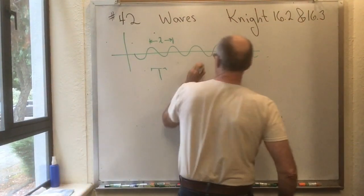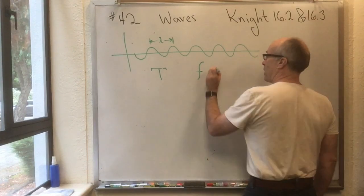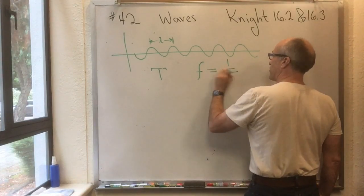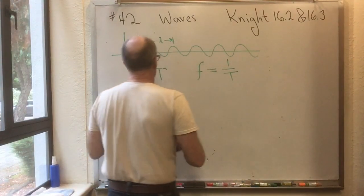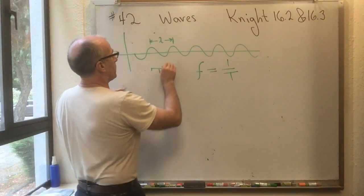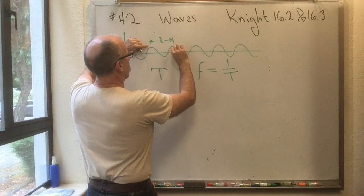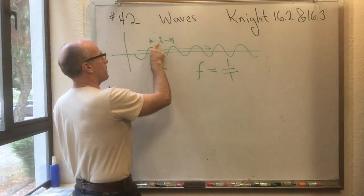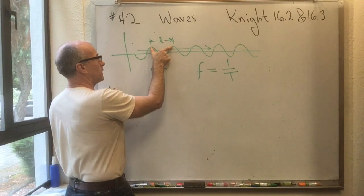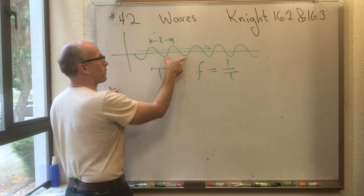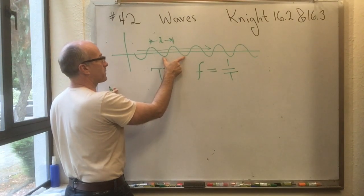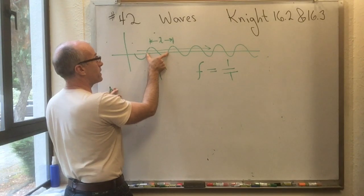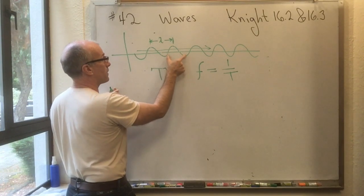Another thing that we reused from the last chapter is we call F equal to 1 over T, the frequency. So if this is a wave train, and this entire wave train is moving to the right, lambda is the distance between wave crests, or the distance between wave troughs, it doesn't matter, or even the distance between zeros. Any of those is lambda.